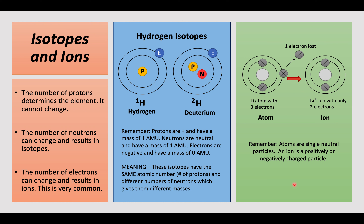Now let's talk about ions. Atoms are single neutral particles, and an ion is a positively or negatively charged particle — an atom or molecule with a net electric charge due to the loss or gain of one or more electrons. In this example, we have a lithium atom with three electrons. Lithium loses one of its electrons, and now we have a lithium ion with only two electrons. It still has the same number of protons, but this ion has a positive charge because we lost one electron.